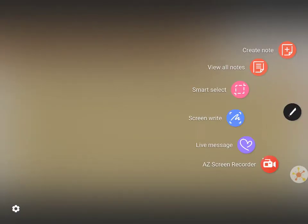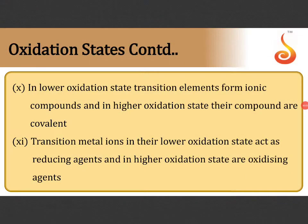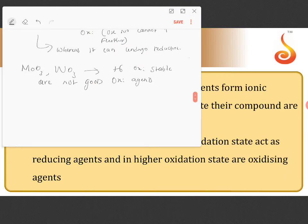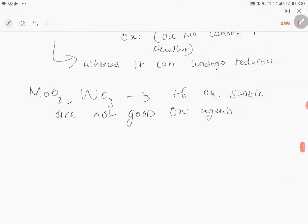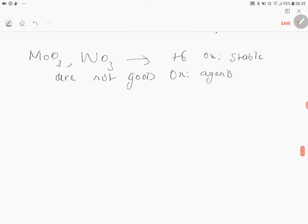Additional points for these two points: whatever oxidation states are given, the higher oxidation state can undergo reduction, lower oxidation states can undergo oxidation. Oxidation and reducing agents - apart from this, the most important fact is point number 11.